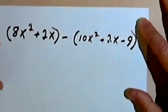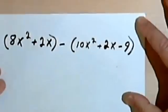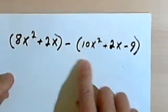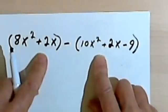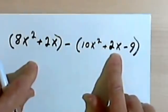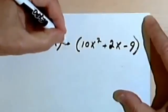Subtraction is not much more difficult after we've taken care of the minus sign. So here are two polynomials: 8x² + 2x minus 10x² + 2x - 9.